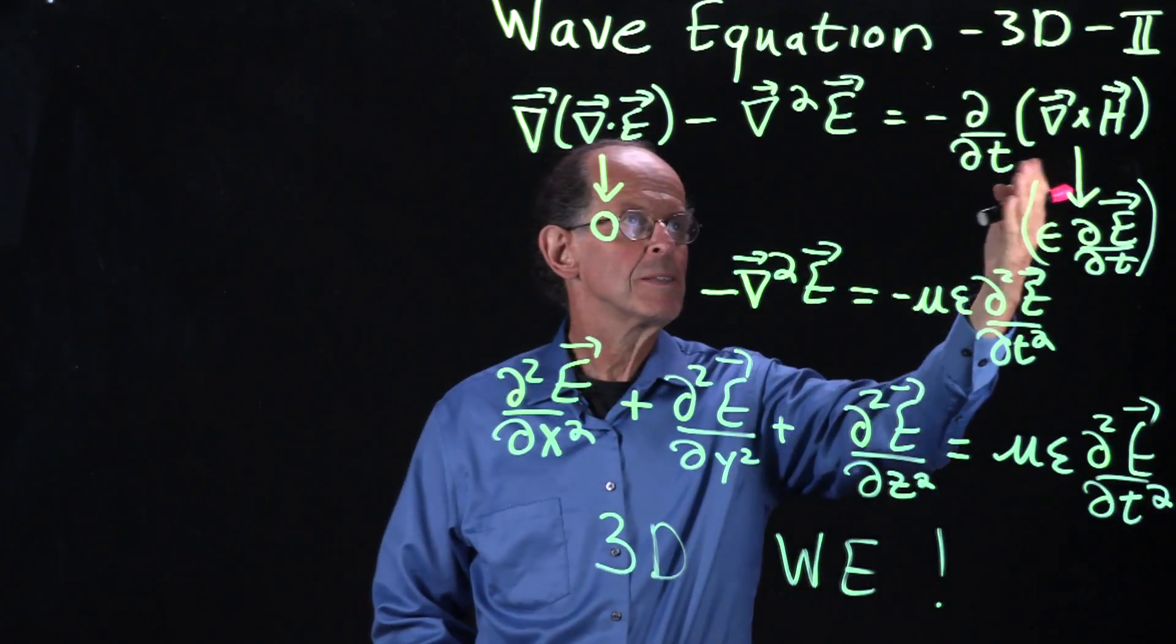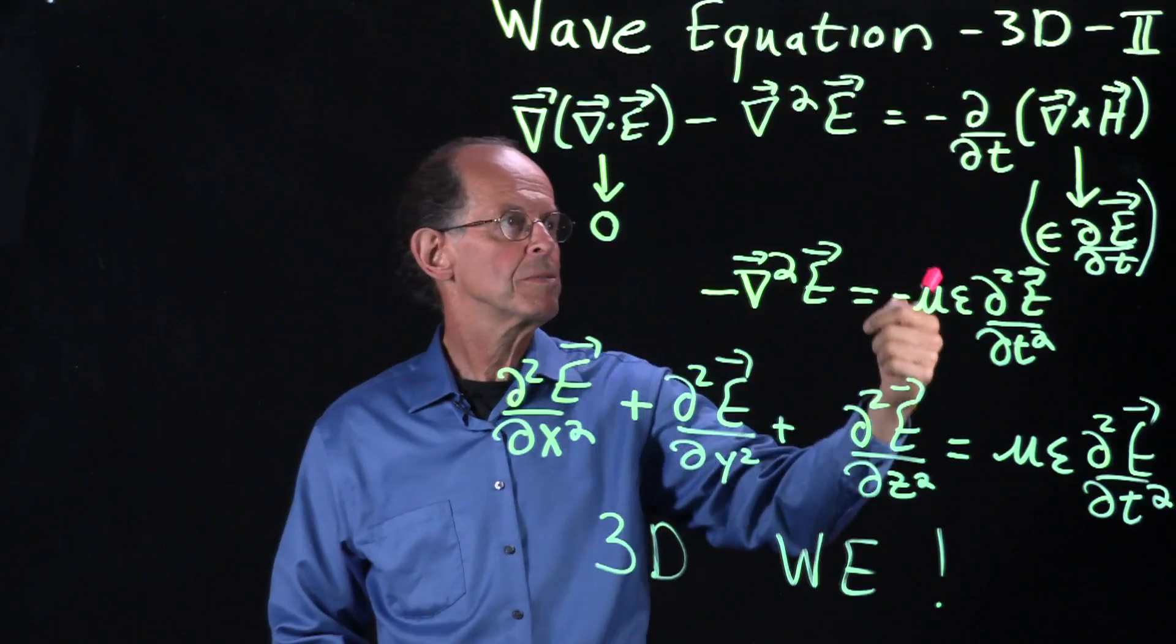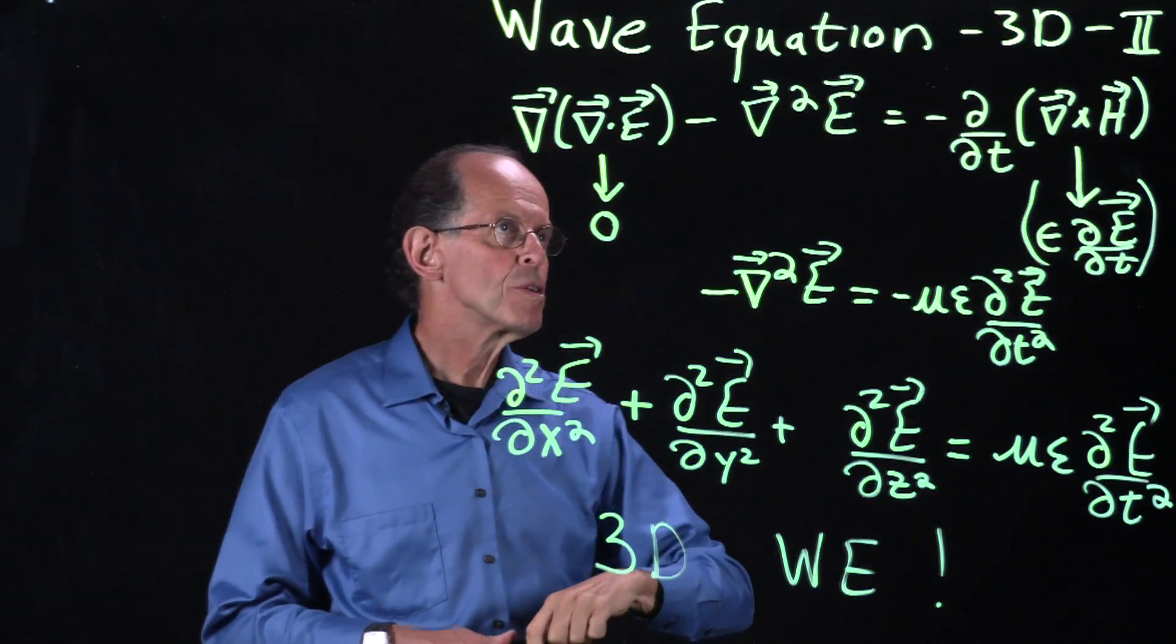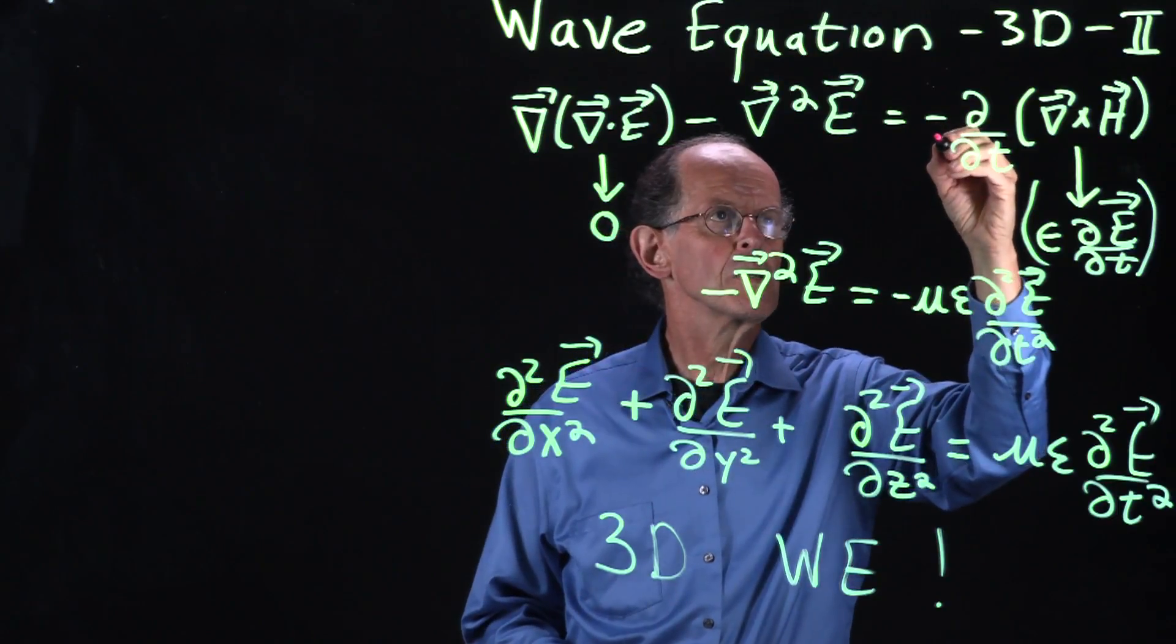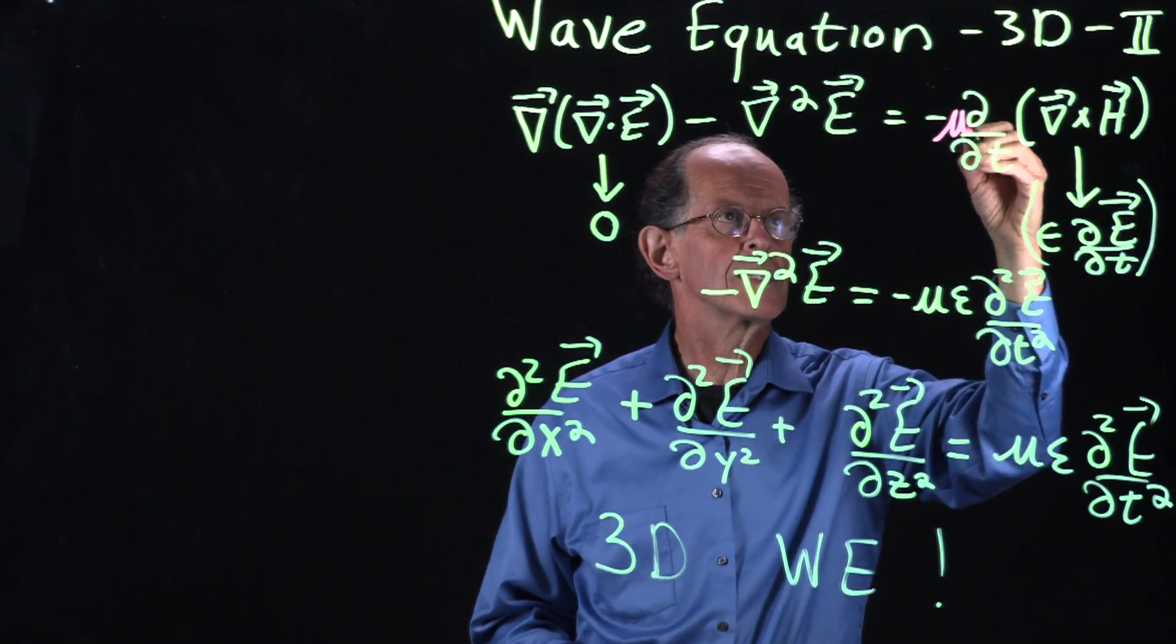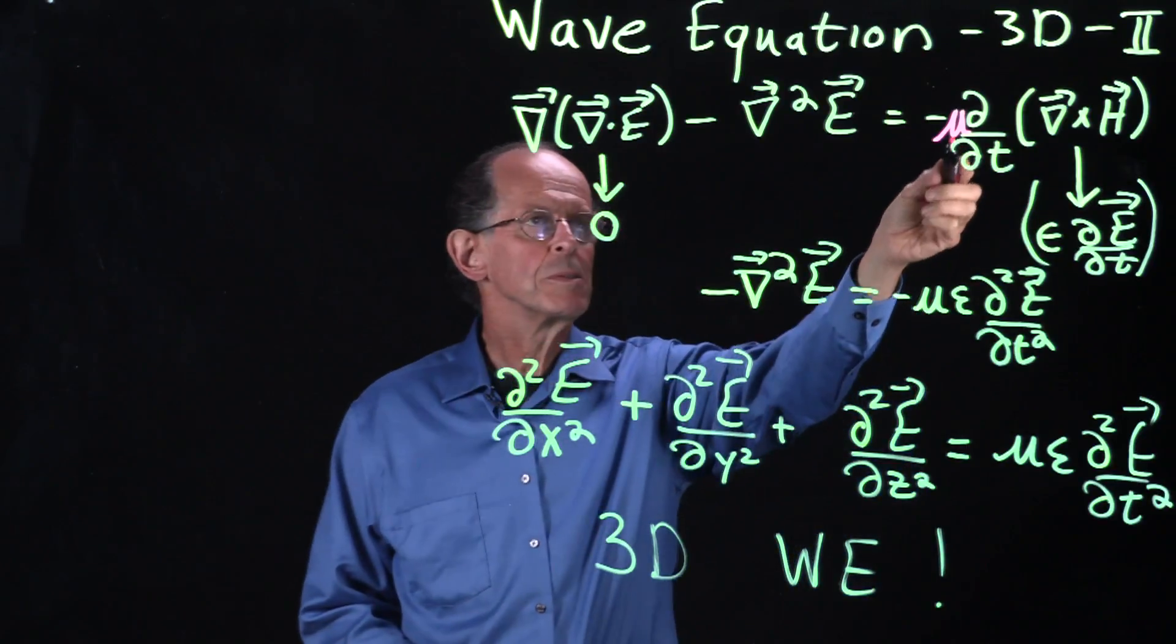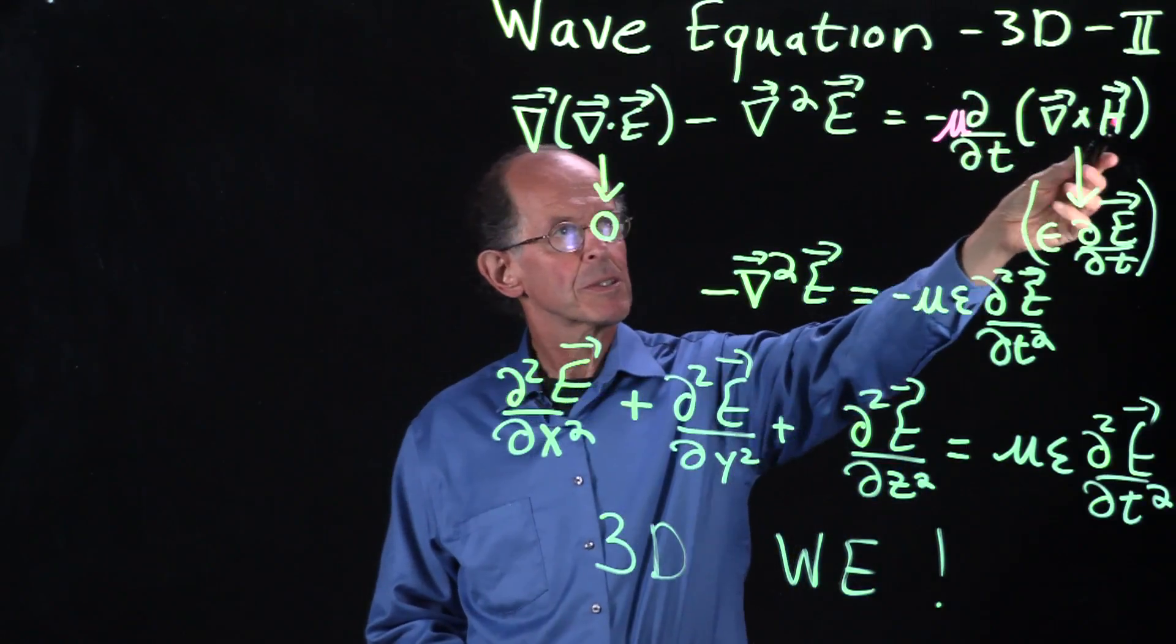On the right-hand side, we have minus the time derivative of the curl of H. And there's a mu that should be right here as well. So let's put in the mu. So minus mu, time derivative of the curl of H.